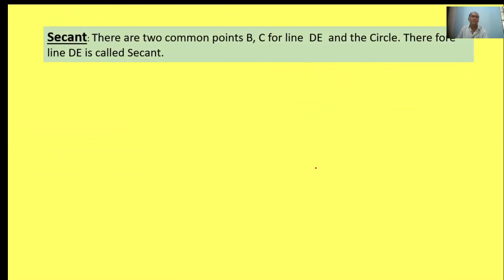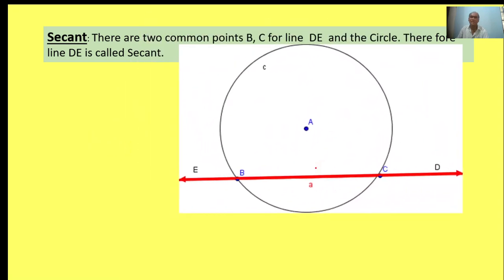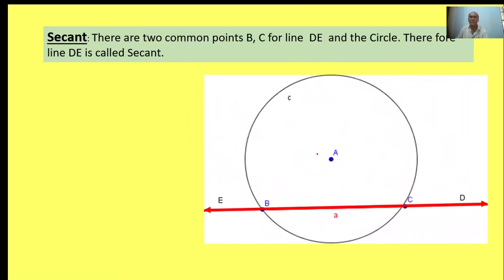Secant: there are two common points B and C of line DE and the circle. Therefore, line DE is called a secant. Here, A is the center point, B and C are points on the circle. Line DE has two points on the circle; therefore, DE is a secant.